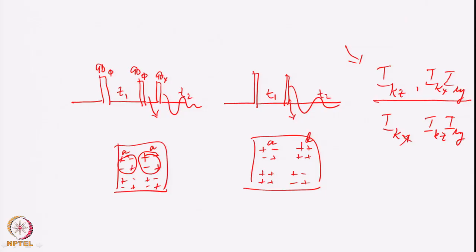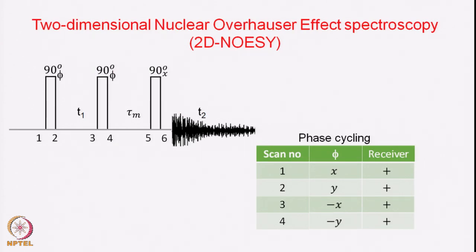This brings in a new concept — a totally new thought with regard to manipulation of magnetization transfers and the nature of the spectra. This is quite important and applicable in many other experimental sequences. I am going to demonstrate one more such application where we choose a particular kind of magnetization, namely IKz. That experiment is called 2D Nuclear Overhauser Effect Spectroscopy, or 2D NOESY.